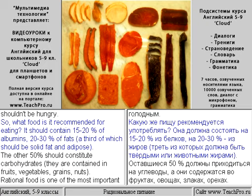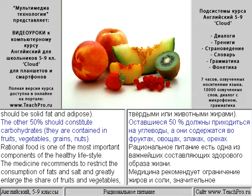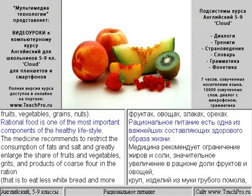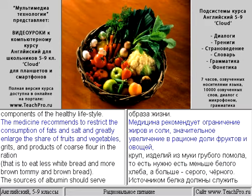What food is recommended for eating? It should contain 15 to 20 percent of albumins, 20 to 30 percent of fats — a third of which should be solid fat — and the other 50 percent should constitute carbohydrates, which are contained in fruits, vegetables, grains, and nuts. Rational food is one of the most important components of the healthy lifestyle.